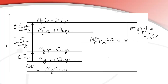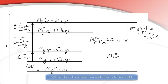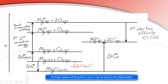We multiply the electron affinity by 2, and then finally we have the lattice enthalpy, delta H lat. Now I'm going to write in the values. The delta H formation is negative — so it's exothermic — negative 642 kJ per mole.